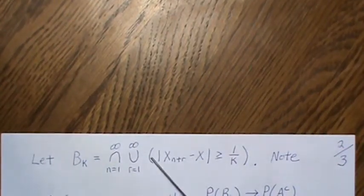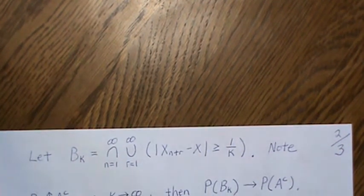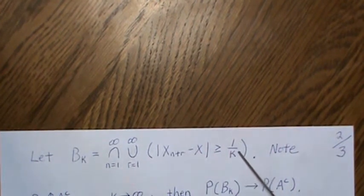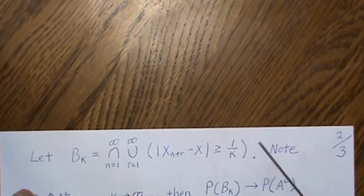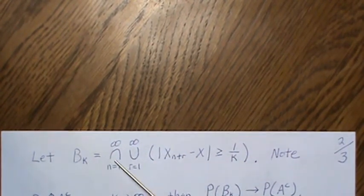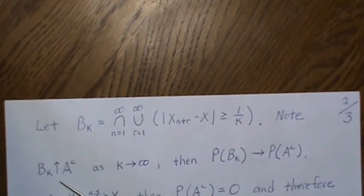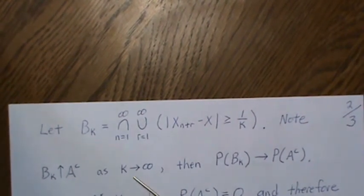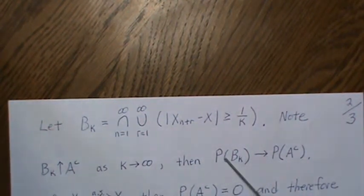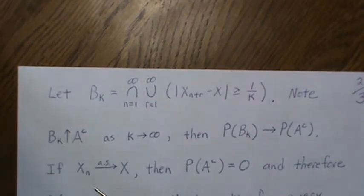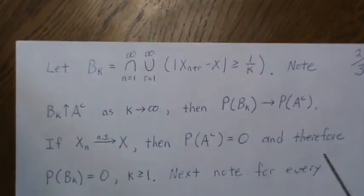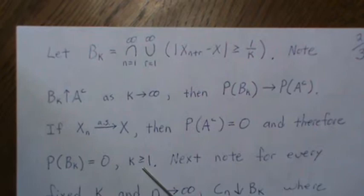So let's let Bk be this set. Remember, we took off the initial union over k, so for a given k this is our set. Notice that if we increase k, this gets smaller - so the possibilities of this happening get bigger. For each k that gets larger and larger, this set actually gets bigger and bigger too. That means Bk is an increasing sequence to A complement as k goes to infinity. Since it is an increasing set, we know that the probability of Bk approaches the probability of A complement. But if we know that our sequence Xn converges almost surely, then this is zero, so Bk is zero for any k greater than or equal to one.